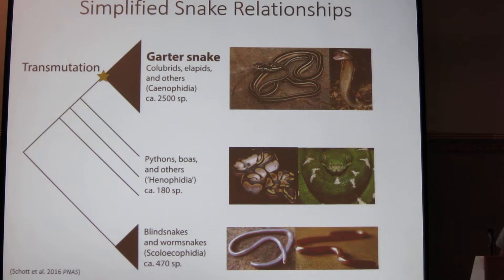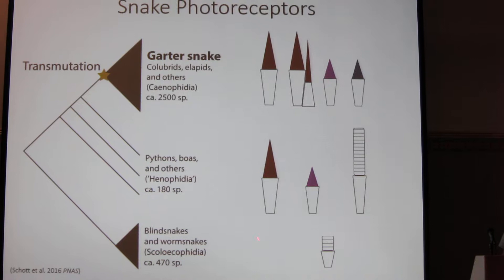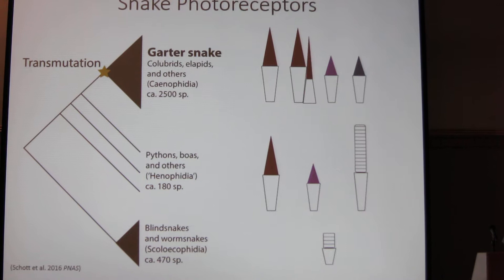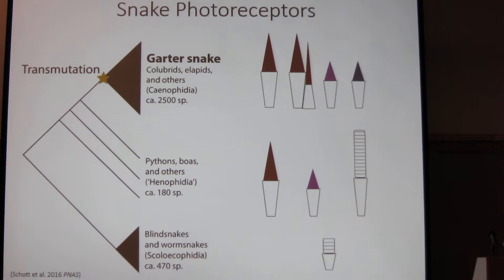When we look at their photoreceptors, in blind snakes and worm snakes we have a very reduced kind of photoreceptor, and this is thought to be a derived condition based on their fossorial nature. In pythons and boas we have what we think is the ancestral condition, having both two classes of cones and one type of rod. And then in the all-cone retina of the garter snake, we don't see a rod, but we do see an extra class of cone. So where did this come from?